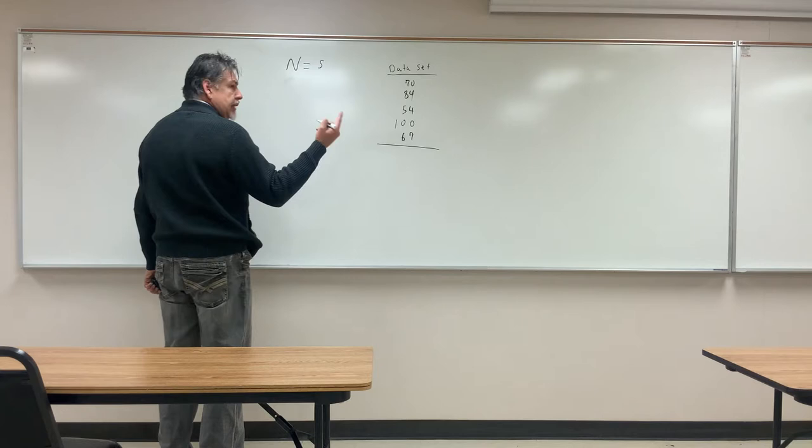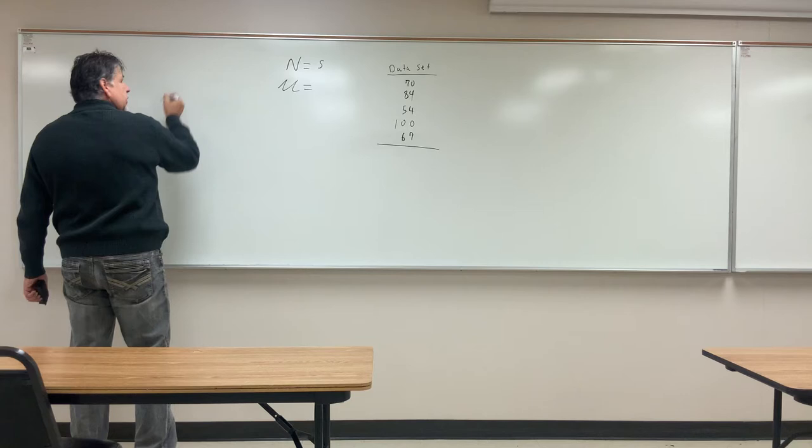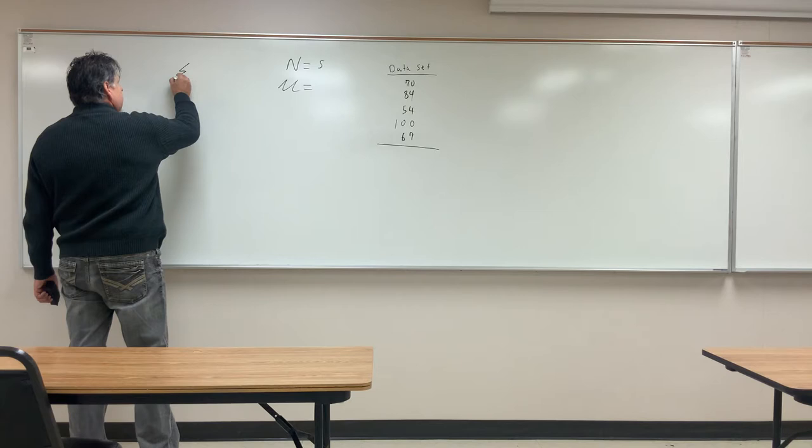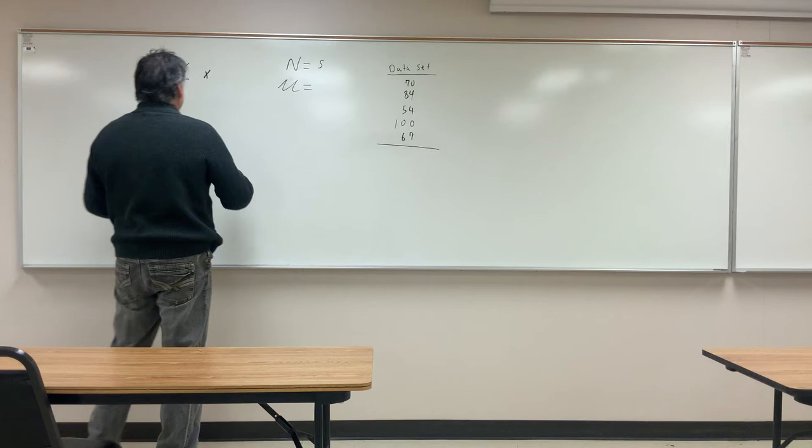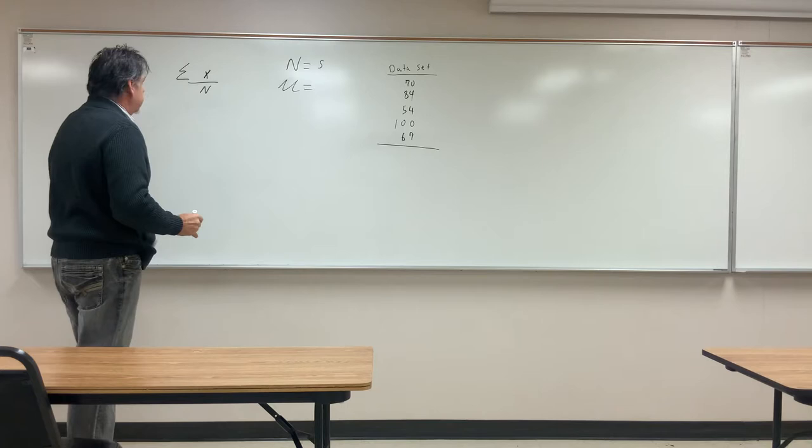So the next thing we need to find is the mean, or mu. Mu is going to be the sum — and we use a symbol for the sum, which is uppercase sigma; it's going to look like an E. That represents the sum of all of our x's, where x represents each one of these data points, all five of them — so the sum of all x's divided by n.